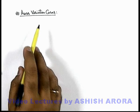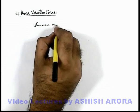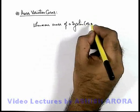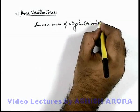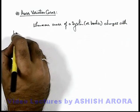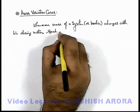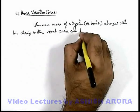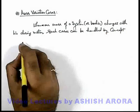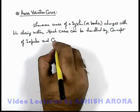Let's analyze mass variation cases. Whenever the mass of a system or bodies changes with time during motion, such cases can be handled by the concept of impulse and conservation of momentum.